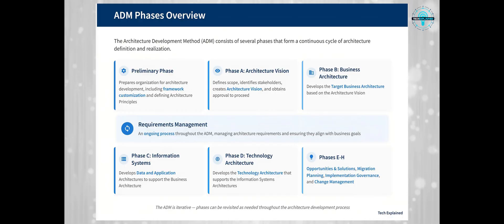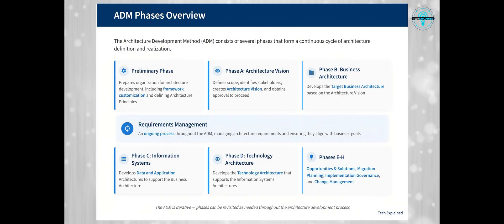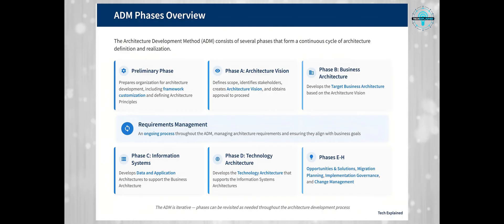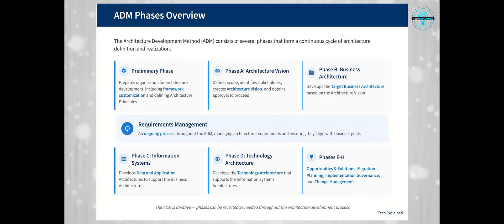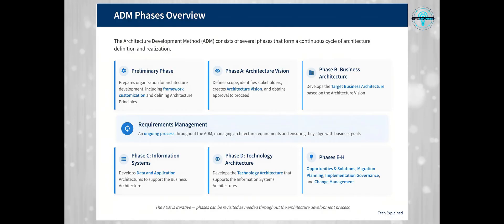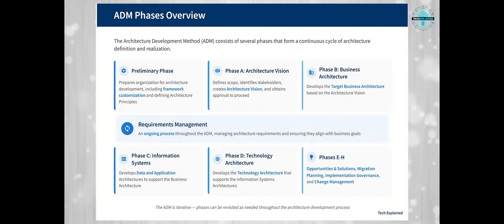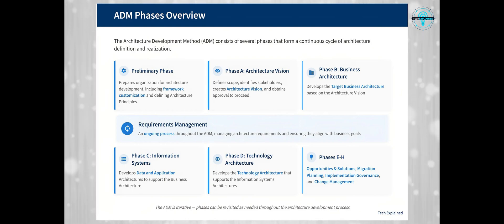Phase G is Implementation Governance, which provides architectural oversight for implementation projects. Finally, Phase H is Architecture Change Management, where you establish procedures for managing changes to the new architecture. Remember, this is a cycle, not a straight line — you can and often do revisit phases as needed throughout the architecture development process.